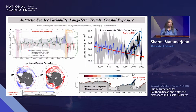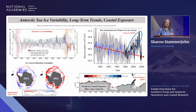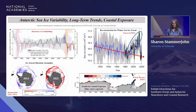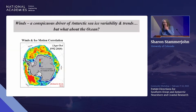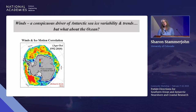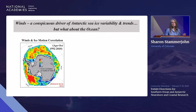We also have a new metric from Phil Reid and Rob Massom looking at coastal exposure — a map showing the trends over the satellite era where blue means longer exposure. All of West Antarctica is trending towards longer and longer exposures to wind and waves. For the last year or two we've also been at a record high of coastal exposure everywhere, not just West Antarctica. Winds are the conspicuous drivers — the Southern Ocean is exposed to the highest wind and waves on the planet, and we see very strong variability associated with atmospheric circulation.